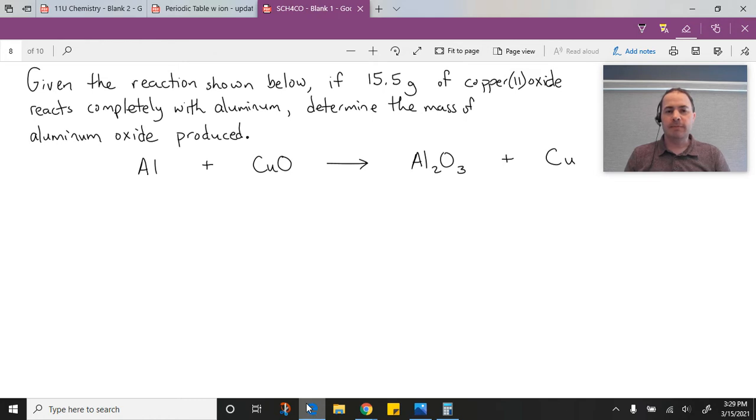Because we start with a mass of our substance, the very first thing we need to do is convert that to moles so we can do our comparison. That's where the stoichiometry, that comparison of mole ratios, comes into play. Let's take a look at how we're going to solve this problem.